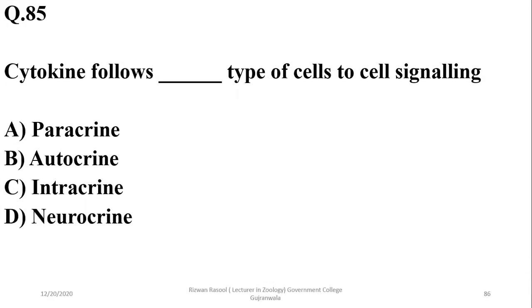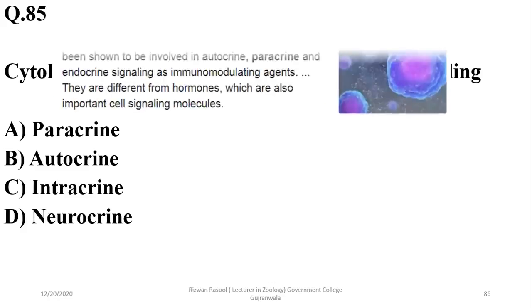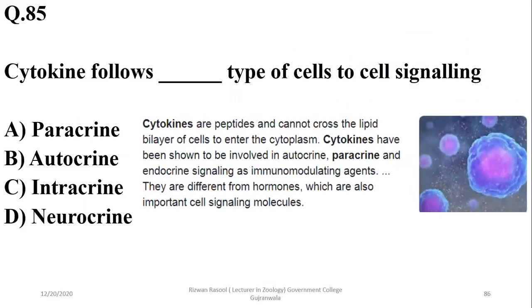Question 84: Cytokines follow which type of cell-to-cell signaling? Cytokines actually follow paracrine as well as autocrine communication. So I will not choose any single option — both alpha (paracrine) and beta (autocrine) are correct according to information available online.